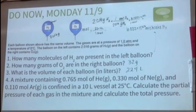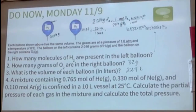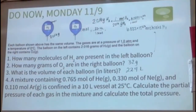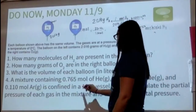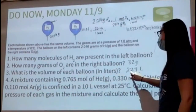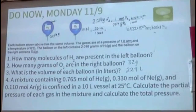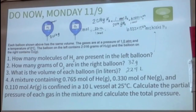We can use molar volume here because we are at STP. If we were at any other set of conditions, we'd have to use the ideal gas law. Number four is separate: a mixture containing 0.765 moles of helium, 0.33 moles of neon, and 0.11 moles of argon is confined in a 10-liter vessel at 25 degrees Celsius. Calculate the partial pressure of each gas and the total pressure. With partial pressures, we act like each one of these gases is behaving individually.